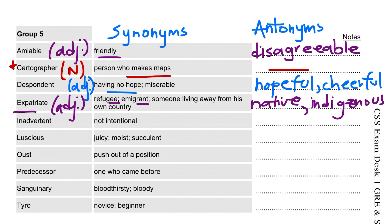Next is inadvertent. This is an adjective and it means not intentional. If something happens without any intention or purpose, it means it is inadvertent.